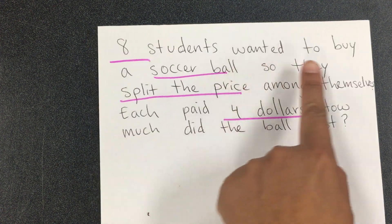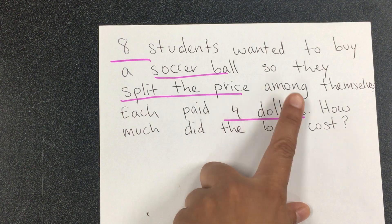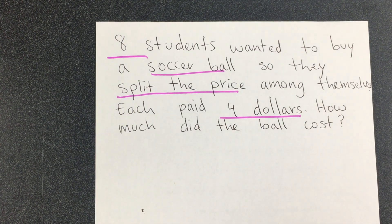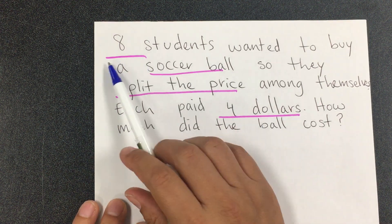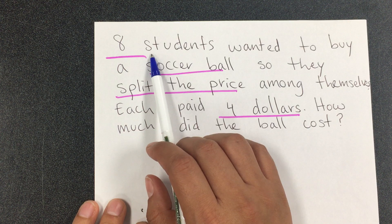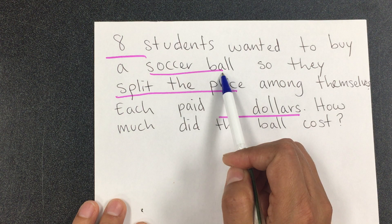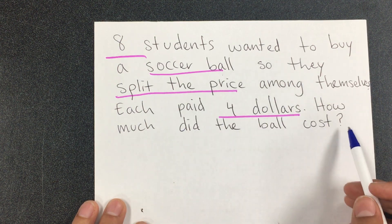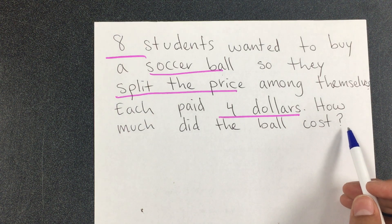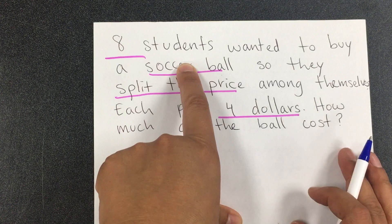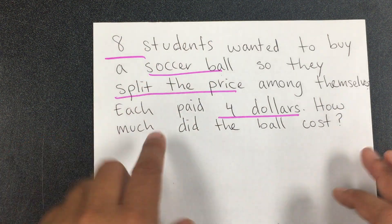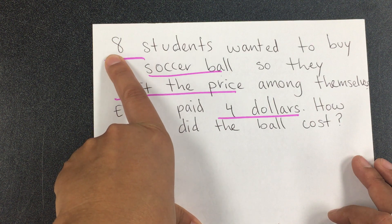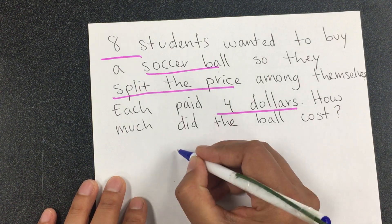The next one says: eight students wanted to buy a soccer ball, so they split the price among themselves. Each paid four dollars. How much did the ball cost? We underline eight students. We don't know the price of the ball, so that's X. 'Split' means dividirse — that price is divided among the eight students, and they each paid four dollars.